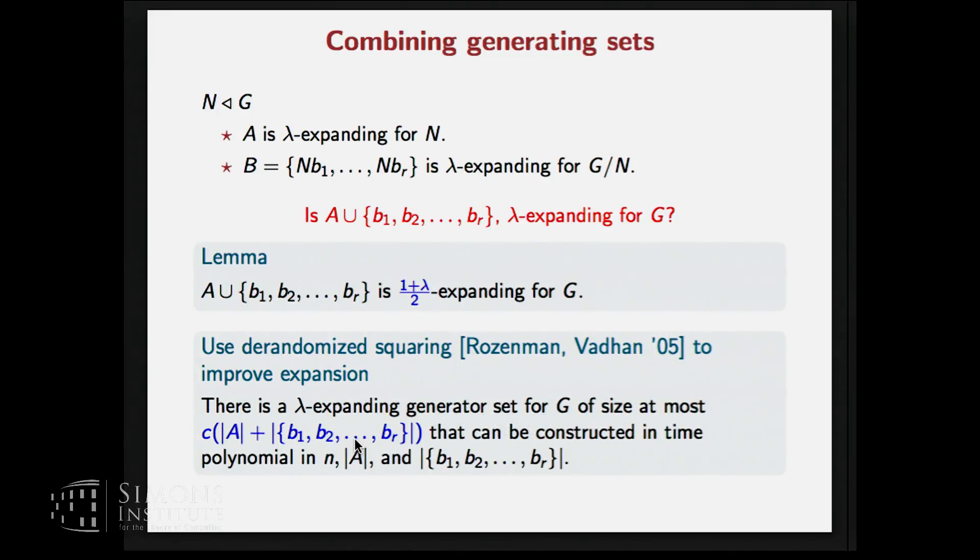So fortunately, there is a result, there is something called derandomized squaring by Rozenman and Vadhan. So the idea here is that if we have this particular expansion for G and if we square the corresponding Cayley graph, the expansion improves but then the degree blows up. And using derandomized squaring, we precisely avoid the blow up in the degree and we still improve expansion. So from this size, the generating set now grows to a constant factor of this and we get a lambda expansion as we need. And as it turns out, this constant factor doesn't harm us much. We still get a reasonable expander in the end.